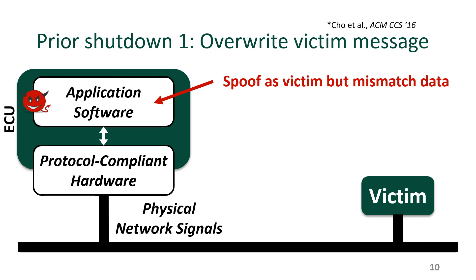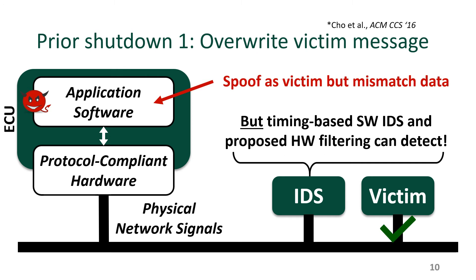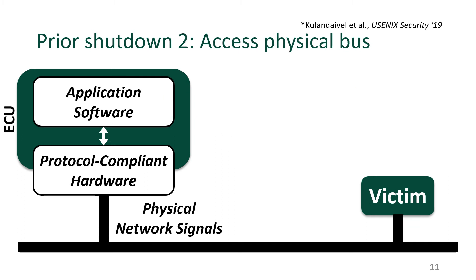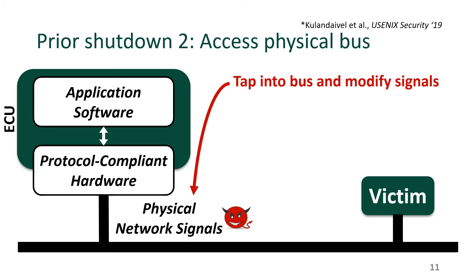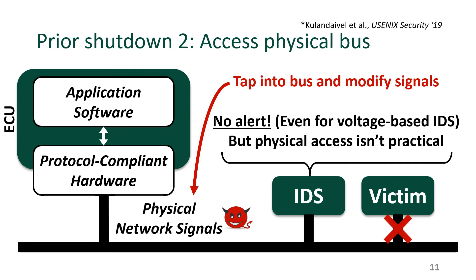Looking at prior work on shutdown attacks, one approach uses the compromised ECU to send out spoofed messages as if these messages originated from the victim. By forcing certain bits to mismatch what the victim sends and by perfectly timing these messages to override a victim, the attacker can trick a victim into shutting itself off. However, this approach isn't very reliable in practice, and the automotive industry has built software-based IDSs that can detect anomalous behavior based on timing, content, and other features. The industry has also proposed using CAN hardware solutions to detect these spoofed messages. What if we could somehow compromise the physical vehicle and tap into the CAN bus to modify signals directly? Here we find that IDSs do not produce an alert even for a voltage-based IDS. However, this type of attack isn't taken seriously by the automotive industry since physical access isn't practical — an attacker might as well cut the brake lines and can only attack one car at a time.